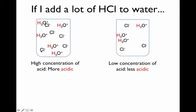The concentration of HCl in the left container is high, compared to the container on the right, where I didn't put as much hydrochloric acid. Because of that, the right container is less acidic. They both contain the same types of molecules — HCl dissolved in both — but there's less HCl on the right, so there are fewer H3O+ molecules and fewer Cl- molecules. The left container is more acidic with a higher acid concentration; the right is less acidic.